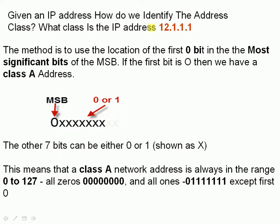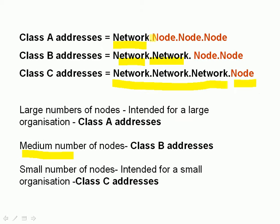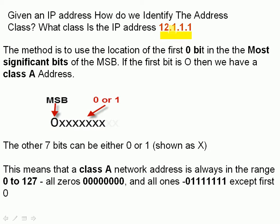The problem is: given an IP address, how do we know which is the network component and which is the node component? Is this a class A address, is this a class B address, or is it a class C address? Once we know which address class it is, then we know which is the network component and which is the node component.